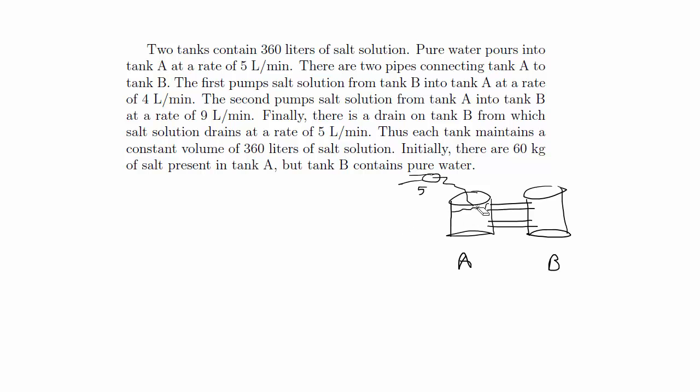and we still have a constant volume of solution of salt water in each tank. This time the rate of flow from tank A to B and B to A is going to be different. To account for a constant volume still, we're going to have a spigot that pours pure water into tank A to maintain a constant volume, and we're also going to have a drain on tank B that exits salt water solution. That's kind of my mediocre drawing of it.